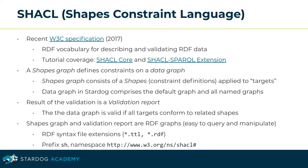In this training, we will cover the main SHACL core and SHACL SPARQL extension parts of the standard. SHACL definitions are themselves RDF. A so-called shapes graph defines constraints on the data graph. The shapes graph consists of shapes which express constraints applied to targets in the data graph. The data graph in Stardoc comprises the default graph and all named graphs — any local graph of the database is validated. The result of a SHACL validation is a validation report.